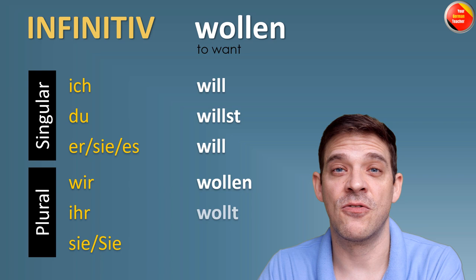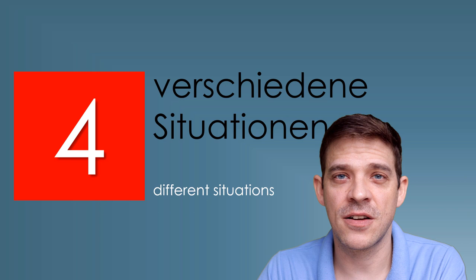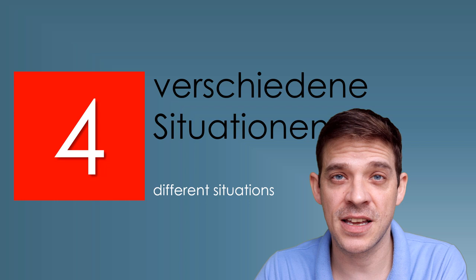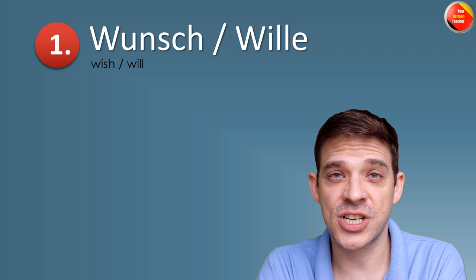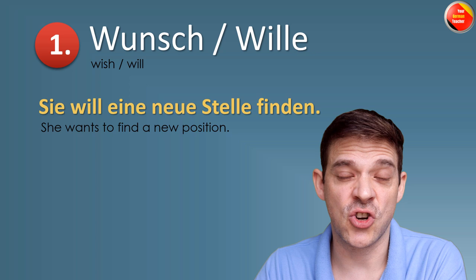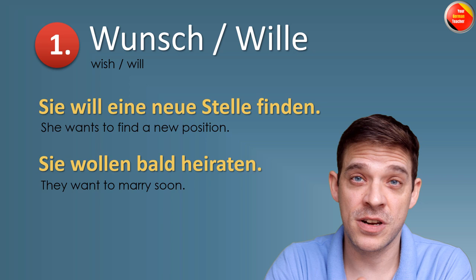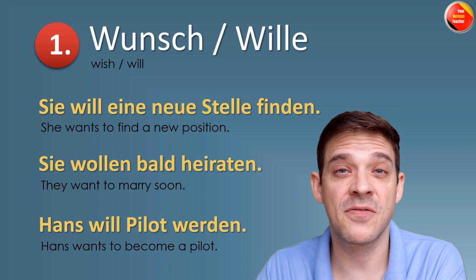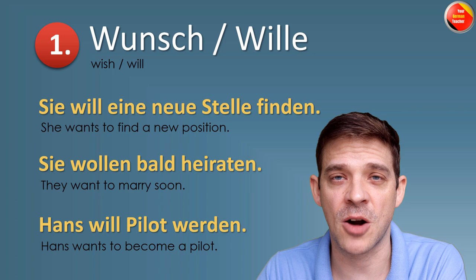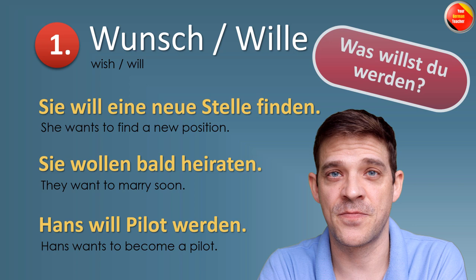Wollen has four situations where we can use it. Nummer eins ist Wunsch oder Wille — wish or will. Zum Beispiel: Sie will eine neue Stelle finden — she wants to find a new job. Sie wollen bald heiraten — they want to marry soon. Hans will Pilot werden — Hans wants to become a pilot. This is a very common question especially when you're young: Was willst du werden? What do you want to become? And you can answer: Ich will [dream job] werden.